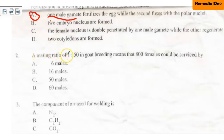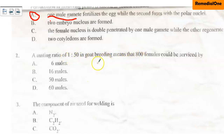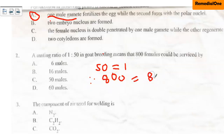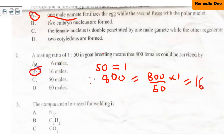Question two: a mating ratio of 1 to 50 in goat breeding means that 800 females could be serviced by A. six males, B. ten males, C. fifty males, D. sixty males. This is a simple ratio. If 50 females could be serviced by one male, then 800 females will need 800 times 1 divided by 50. So the correct answer is option B, which is 16 males.